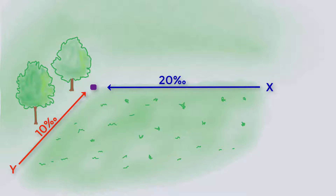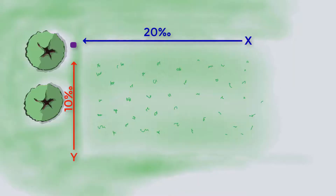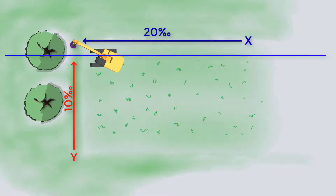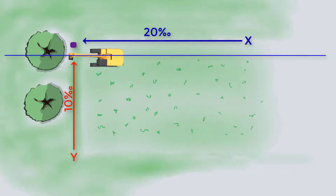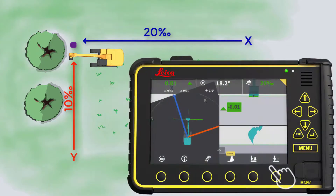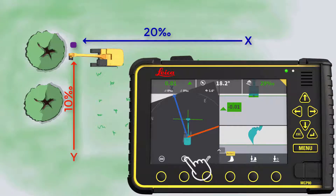Let us have a view from the top. Move the machine near to the reference spot. Rotate the machine so the direction of the boom is aligned with the desired x-direction. On the panel, press x-direction to orient your machine.